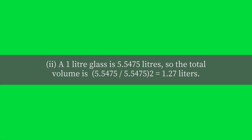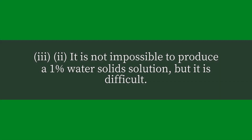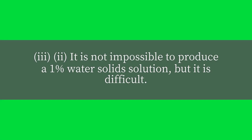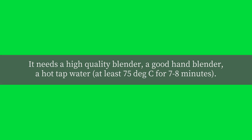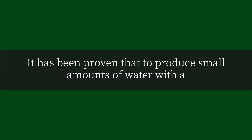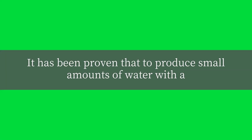A 1 liter glass is 5.5475 liters, so the total volume is 5.5475 divided by 5.5475 times 2, equals 1.27 liters. It is not impossible to produce a 1% water solid solution, but it is difficult. It needs a high quality blender, a good hand blender, hot tap water at least 75 degrees Celsius for 7 to 8 minutes. It has been proven that to produce small amounts of water with a high quality blender is possible.